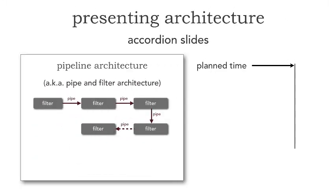My favorite technique is the use of accordion slides — think about playing an accordion really fast. I'm showing a slide about the pipeline architecture, the pipes and filter architecture. Do you notice what's missing? There are no bullet points whatsoever. Neil Ford in his presentation book calls those 'bullet-ridden corpses.' With accordion slides, if I had 25 bullet points I was going to read off about pipes and filter, the problem is I'm committed — I have a contract with the viewer to read and talk about all 25 of those points.